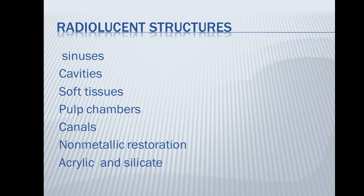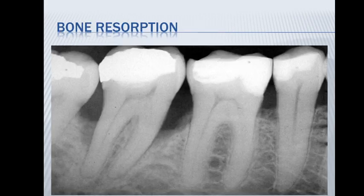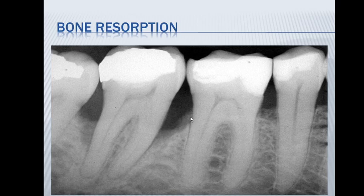Radiolucent structures include sinuses, cavities, soft tissue, pulp chamber, canals, non-metallic restorations, acrylic, and silicate — all appear dark gray or black. If you have cavities, they appear black or dark gray. Bone resorption also appears radiolucent. You can see the level of bone indicating the teeth are loose, with a lot of resorption in the bone.